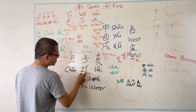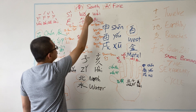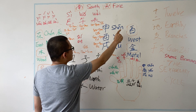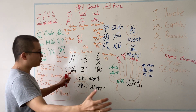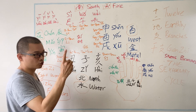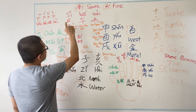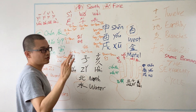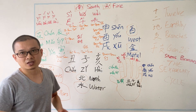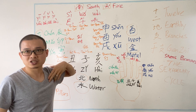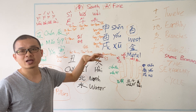The four groups are: Hai, Zhi, Chou as the first group; Yi, Mao, Chen as the second group; Si, Wu, Wei as the third group; and Shen, Yu, Shi as the fourth group. This breakdown is suggested because it makes sense and makes it much easier for you to memorize and to work with in the future.